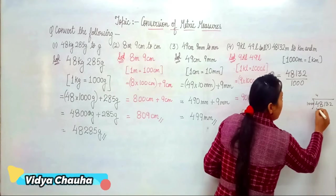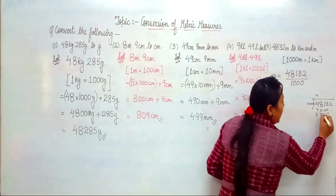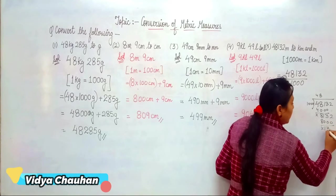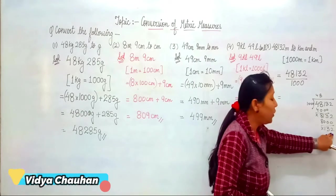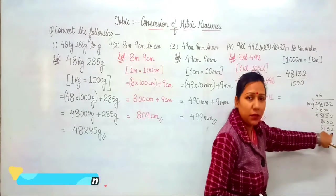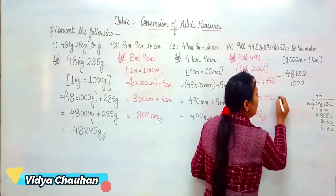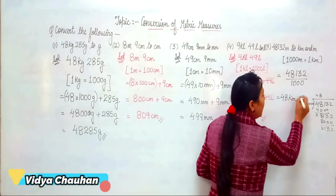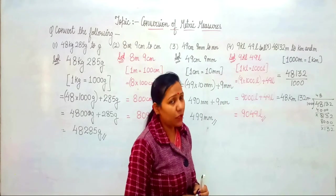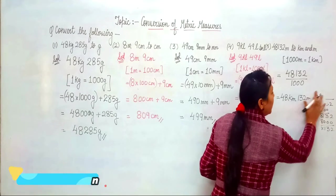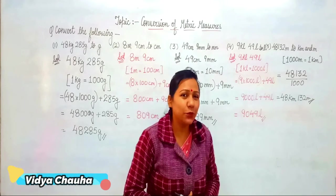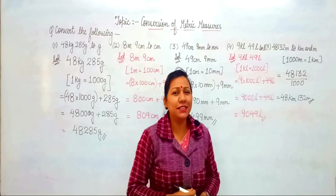Performing the division: 1,000 × 48 = 48,000; subtracting from 48,132 leaves a remainder of 132. We cannot divide further, so the quotient is 48 and the remainder is 132. Therefore, 48,132 meters = 48 kilometers and 132 meters. This is how you work through the book exercise conversion questions. Thank you for the lesson, students — have a great day!